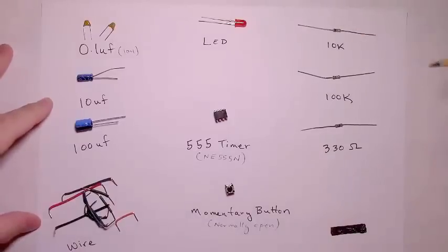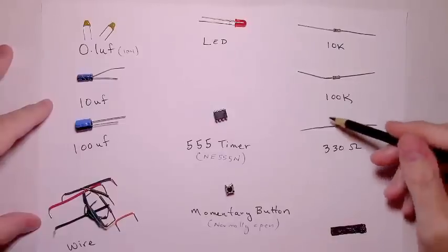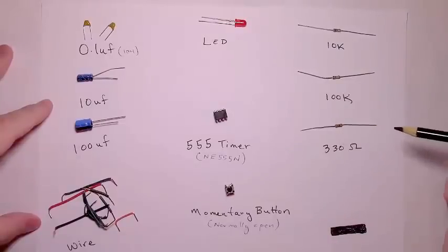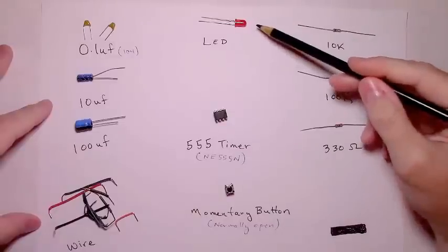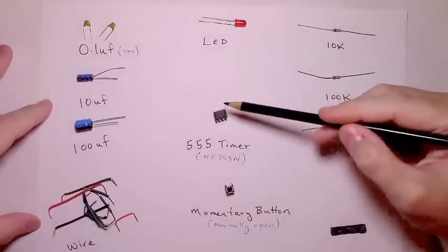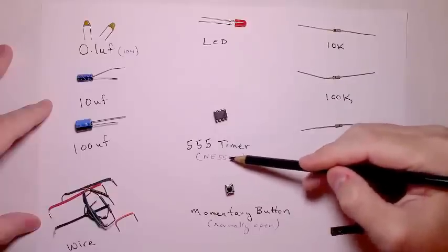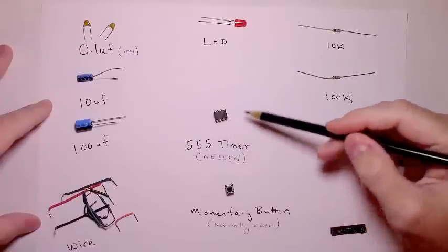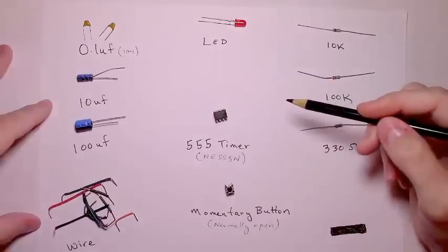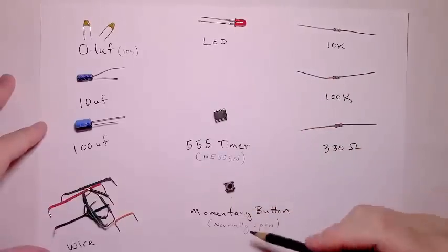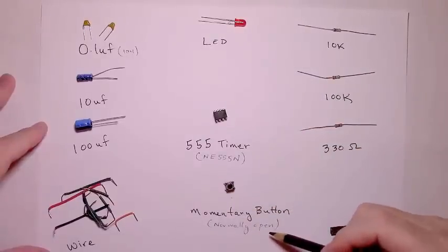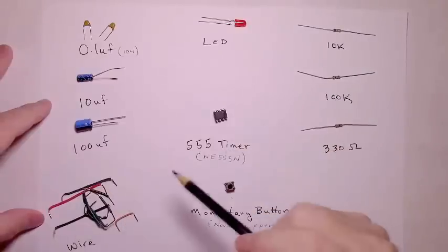A 10K ohm resistor, a 100K ohm resistor, a 330 ohm resistor, an LED, a 555 timer. I'm using an NE555N, but most any kind of 555 timer would work for this circuit. You'll need a momentary button that is normally open and some wire.